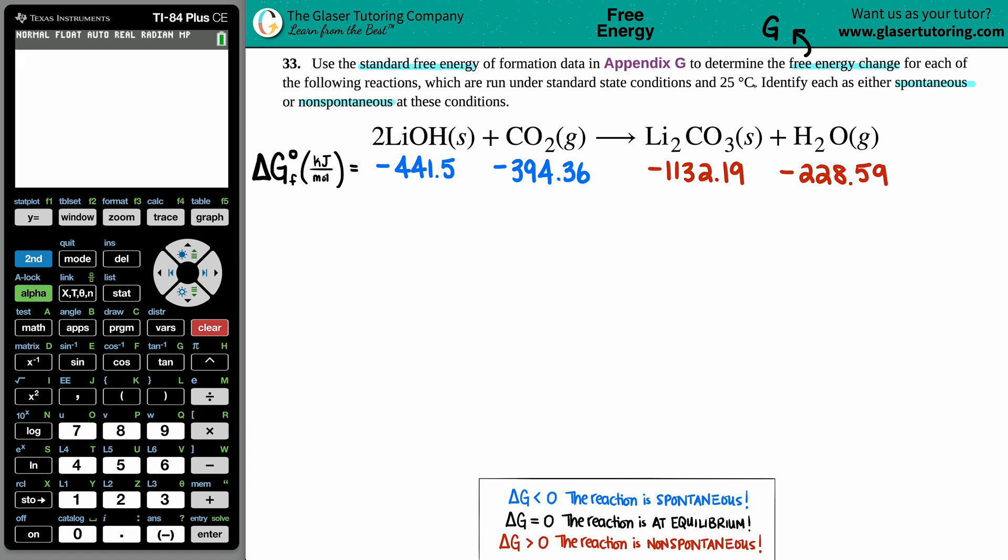We're trying to find a ΔG value - that's Gibbs free energy change, delta meaning change. We're going to do final minus initial or products minus reactants, which we will see in a little bit. Since we want to use our standard energy values from the back of the textbook - in my textbook it's Appendix G - it's standard.